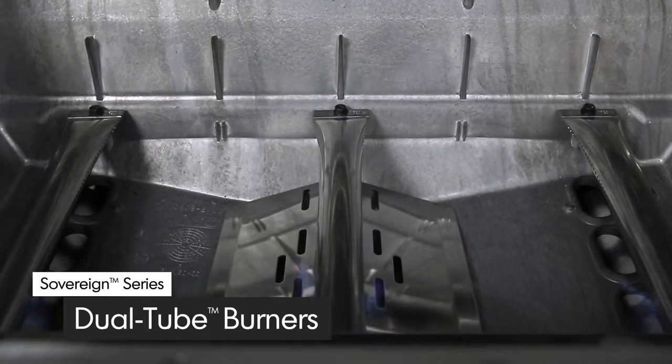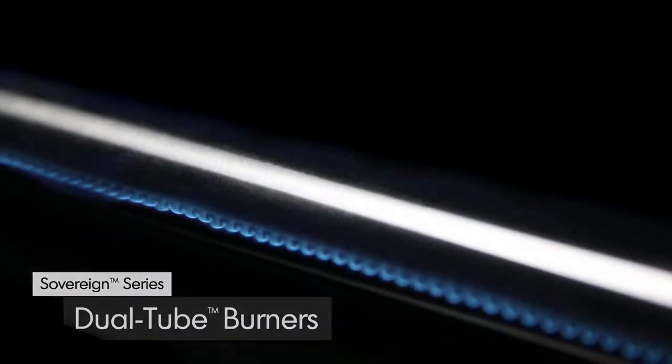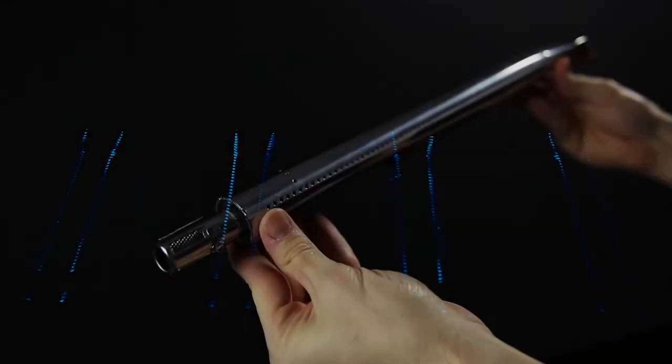All Sovereign models come with either three or four high-quality stainless steel dual-tube side-ported burners. These powerful two-in-two burners play a key role in providing efficient heat through more than 120 ports.